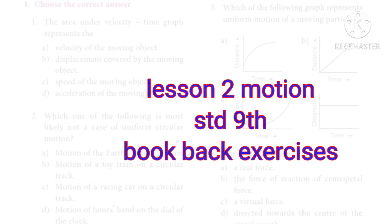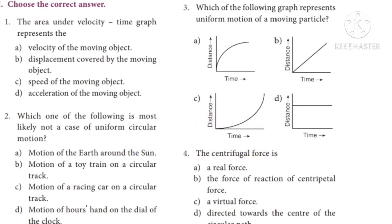First, choose the correct answer. Question 1: The area under a velocity-time graph represents — Option A: velocity of the moving object, Option B: displacement covered by the moving object, Option C: speed of the moving object, Option D: acceleration of the moving object. The correct answer is Option B — displacement covered by the moving object.